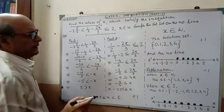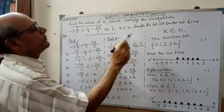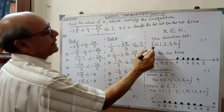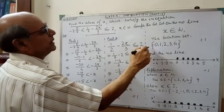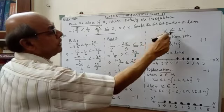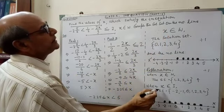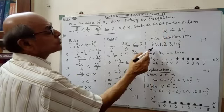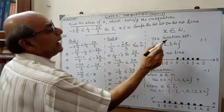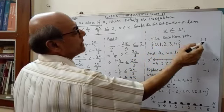One thing you have to remember: in case of real number, you have to write the solution set in set builder notation, as you have seen in the previous class. In case of whole number, natural number, and integer, you have to write the solution set in roster form. If you do correctly, then you will get another part marks, plus 1.